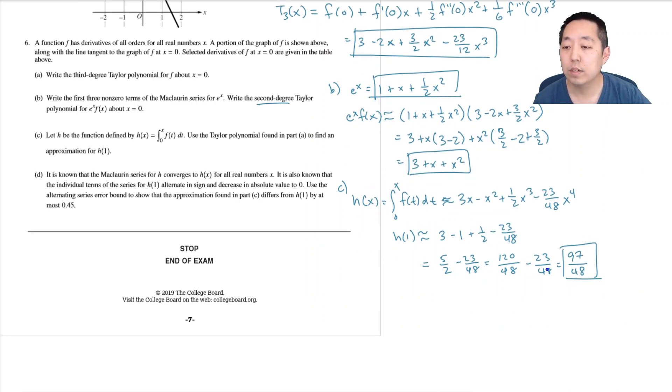Part D: It is known that the Maclaurin series for h converges to h(x) for all real numbers x. It is also known that the individual terms of the series are alternating in sign and decrease in absolute value to zero. Use the alternating series error bound to show the approximation in part C differs from h(1) by at most 0.45.